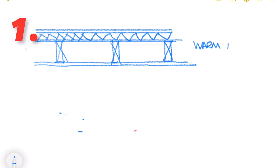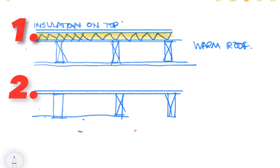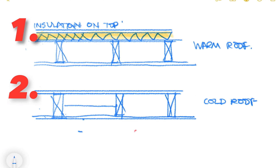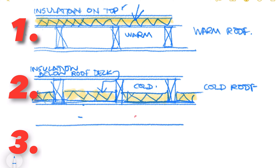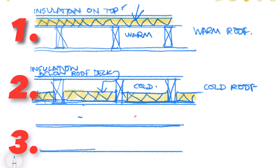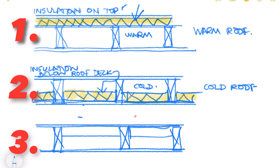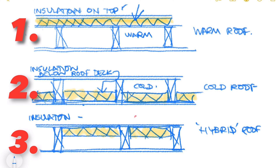In simple terms, a warm roof is where the insulation sits on top of the joists and therefore the roof deck is warm. A cold roof is where the insulation sits between the joists with a ventilated space in the void. A hybrid roof is a term that's recently cropped up — this is where the insulation is pushed to the top with no ventilation space, and sometimes an additional layer of insulation is placed on top to address potential cold bridging issues.